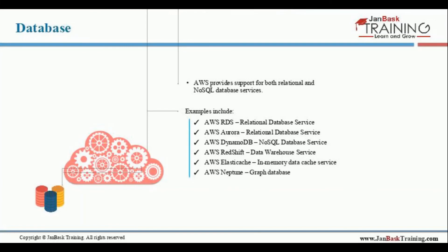DynamoDB provides a NoSQL database service. Redshift is a data warehouse platform. ElastiCache is an in-memory data cache service, and Neptune is a graph database — so all flavors of databases are made available via AWS services.